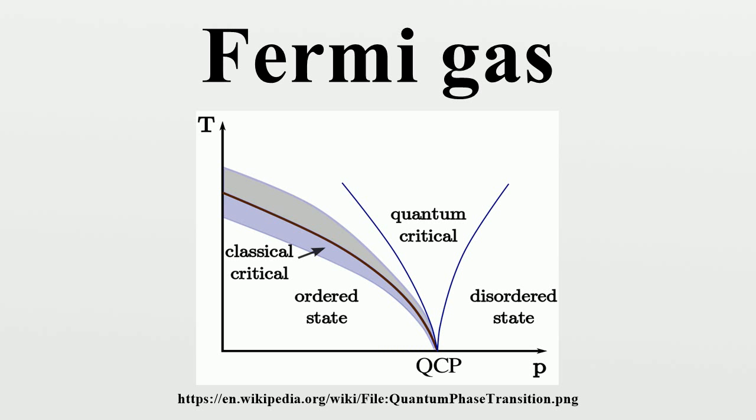The total energy of the Fermi gas at absolute zero is larger than the sum of the single particle ground states because the Pauli principle implies a sort of interaction or pressure that keeps fermions separated and moving. For this reason, the pressure of a Fermi gas is non-zero even at zero temperature, in contrast to that of a classical ideal gas.